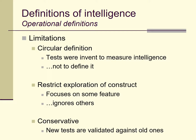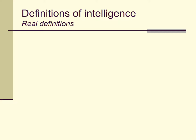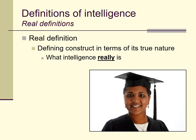These limitations come up especially in intelligence because intelligence is a value-laden construct — something that almost every one of us cares about for personal reasons. We can make a real and important distinction between operational definitions and real definitions. A real definition is an attempt to define the construct in terms of its true nature — what intelligence really is. That's not an easy thing to do. Operational definitions have limitations, but at least they're easy to come up with.